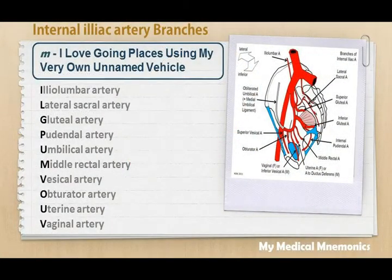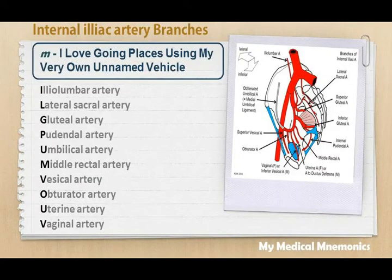To remember these branches, the mnemonic is: 'I love going places using my very own unnamed vehicle.' This helps you remember all the branches of the internal iliac artery. The first three words — I, love, going — represent iliolumbar, lateral sacral, and superior gluteal, which are from the posterior division. The remaining words correspond to the anterior division branches.